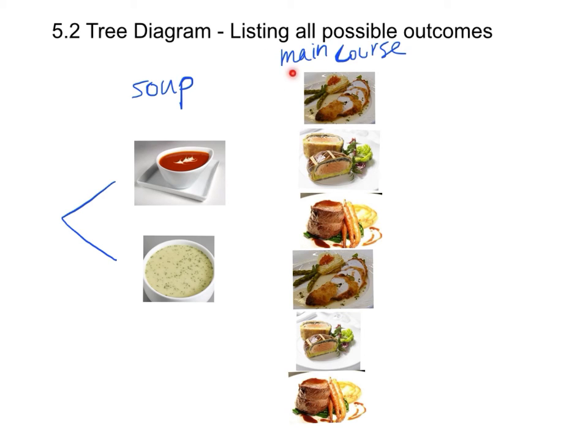Now we come to our main course, which is very delicious. We have chicken, fish, and beef, and therefore we have three choices.